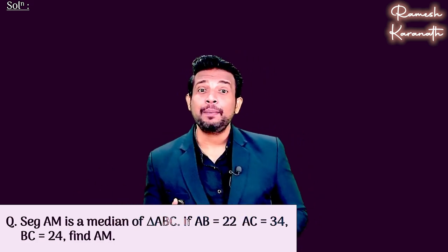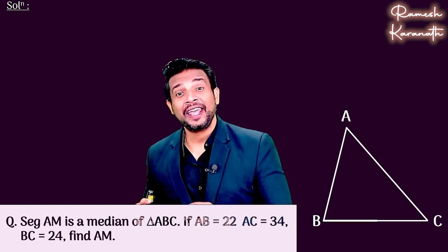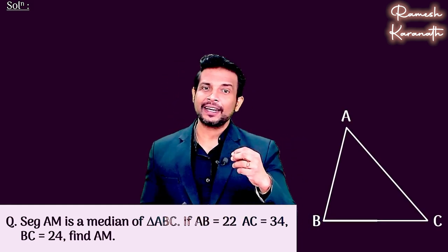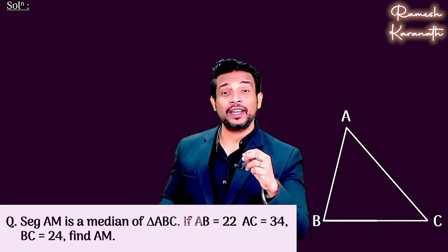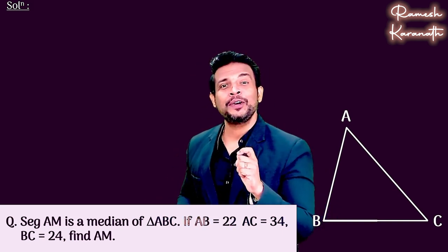Segment AM is a median of triangle ABC. That means it is a triangle, its name is ABC, and AM is a median. So what do we know about the median? It is a segment joining the vertex to the midpoint of the opposite side.